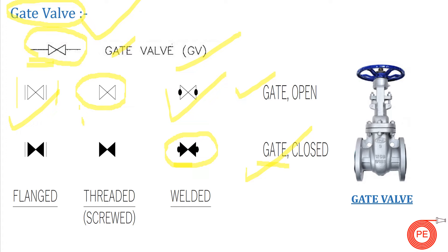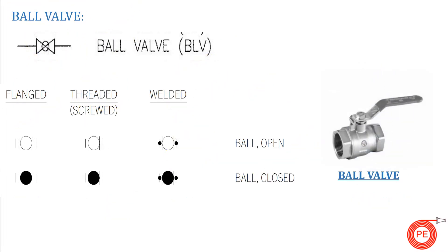Let's move forward to our next valve — the ball valve. If there is a valve symbol with a circle or ball-type sign inside the valve body, this symbol stands for a ball valve. For the open position, there will be no blackness inside it, and if the valve body is shown blackish inside, it means the valve is closed.